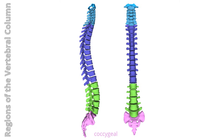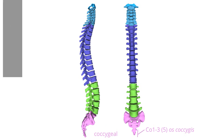Coccygeal region: the most inferior part, composed of three to five fused vertebrae forming the coccyx, or tailbone. The coccyx articulates with the apex of the sacrum.